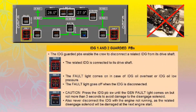The IDG guarded pushbutton enables the crew to disconnect a related IDG from its drive shaft. When there are no lights, the related IDG is connected to its drive shaft. The fault light comes on in case of IDG oil overheat or oil low pressure, and the fault light goes off when the IDG is disconnected.